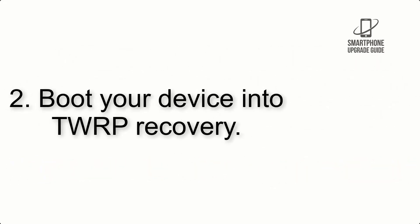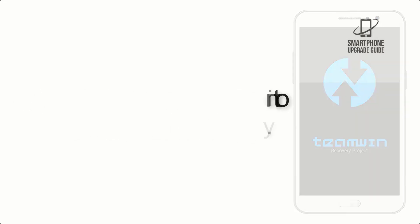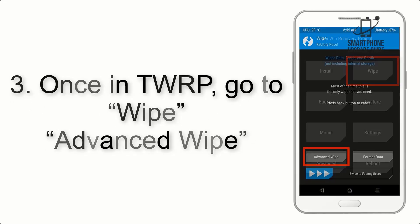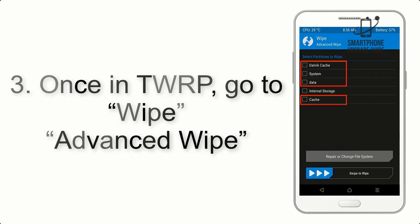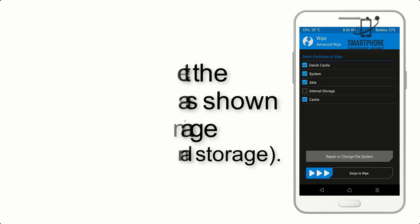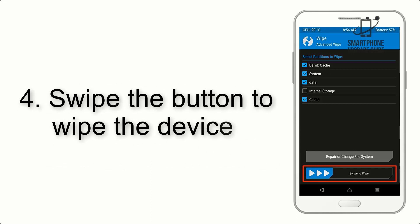Step 2: Boot your device into TWRP recovery. Once in TWRP, click on Advanced Wipe and select the checkboxes as shown in the image, excluding internal storage.